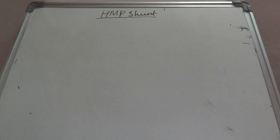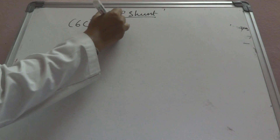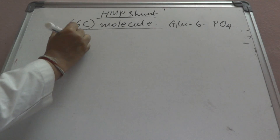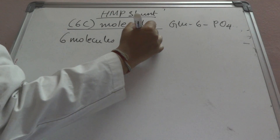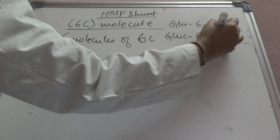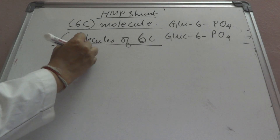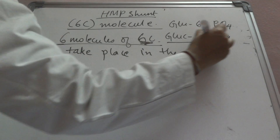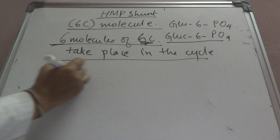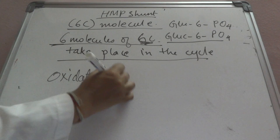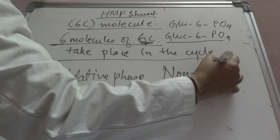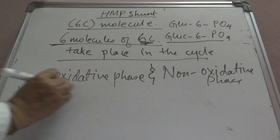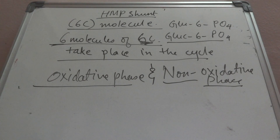The most important thing to remember is that we start with the 6-carbon molecule, that is glucose-6-phosphate. Six molecules of 6-carbon glucose-6-phosphate will take part in the cycle. The cycle has an oxidative phase and a non-oxidative phase. First we see the oxidative phase, then the non-oxidative phase of the HMP shunt.